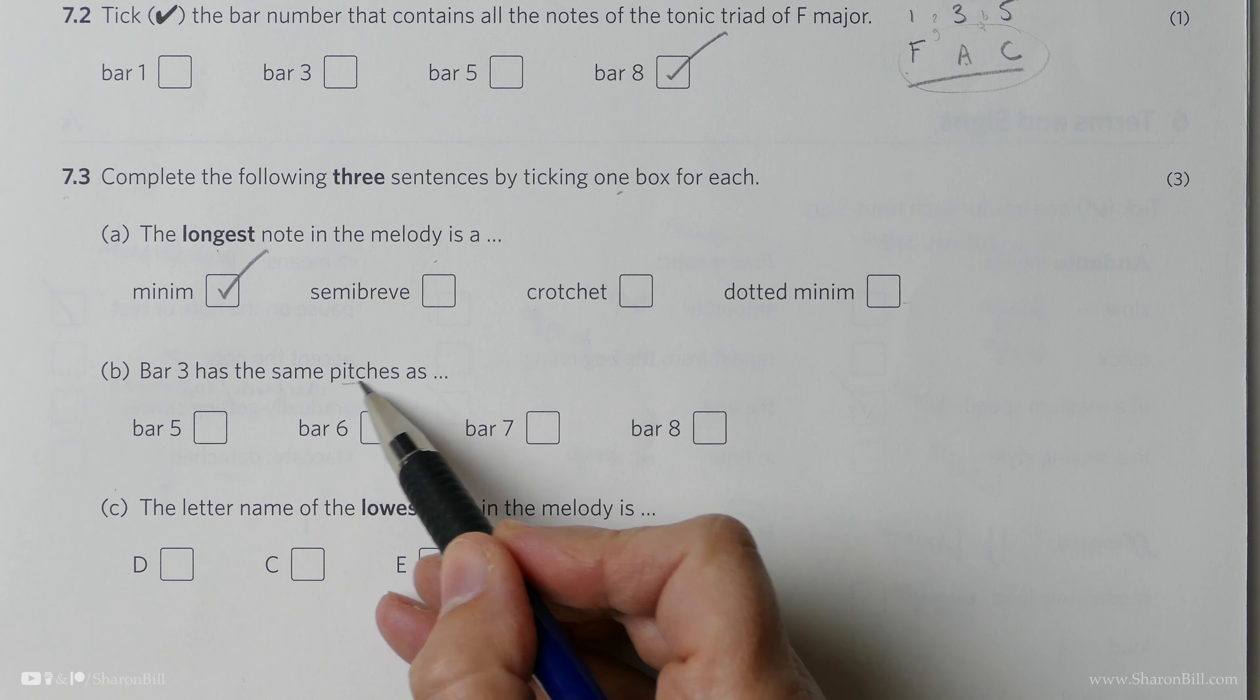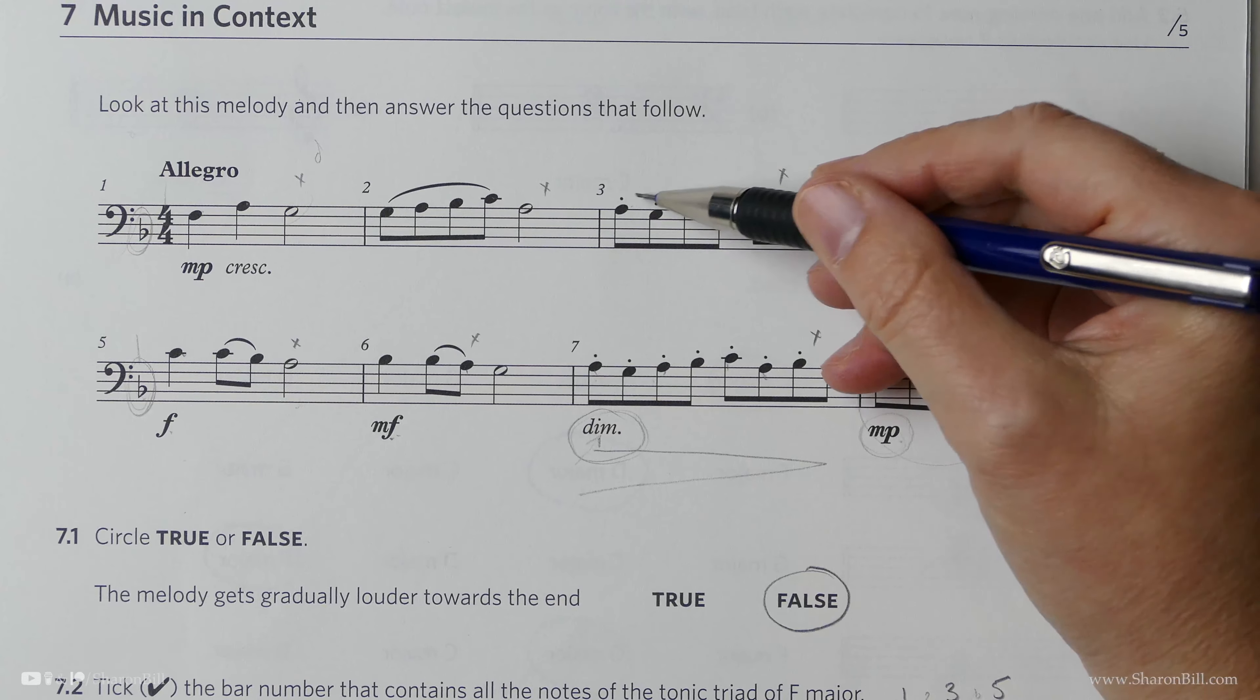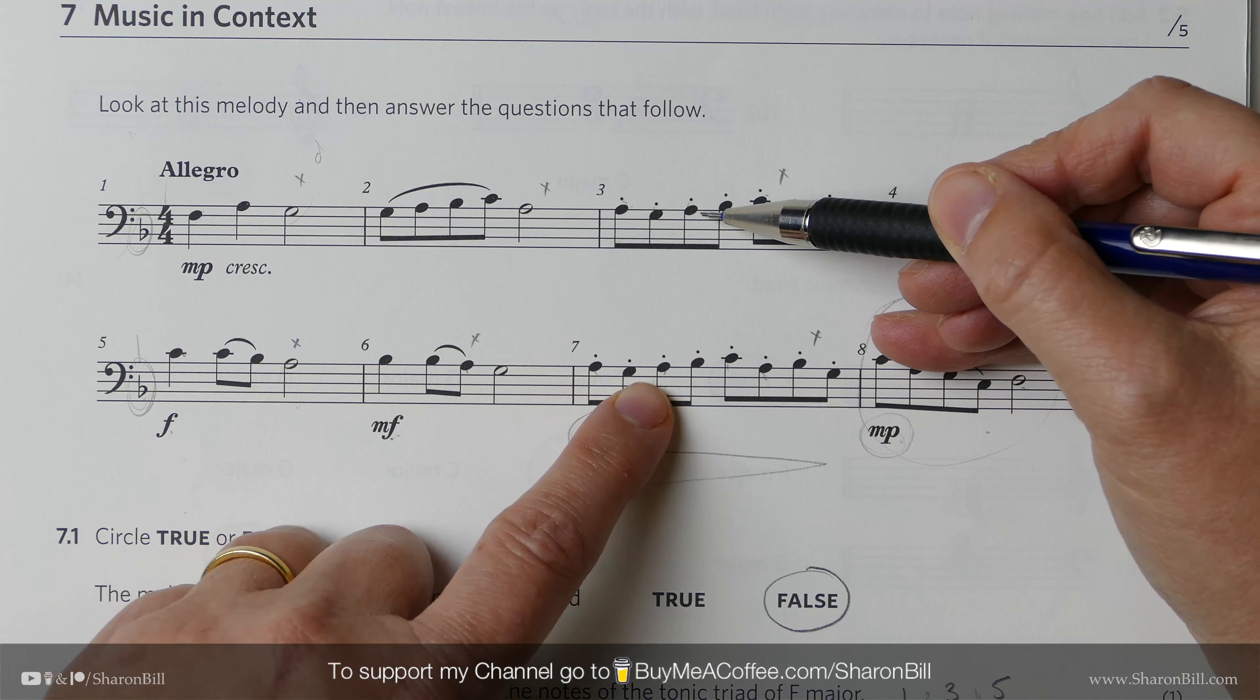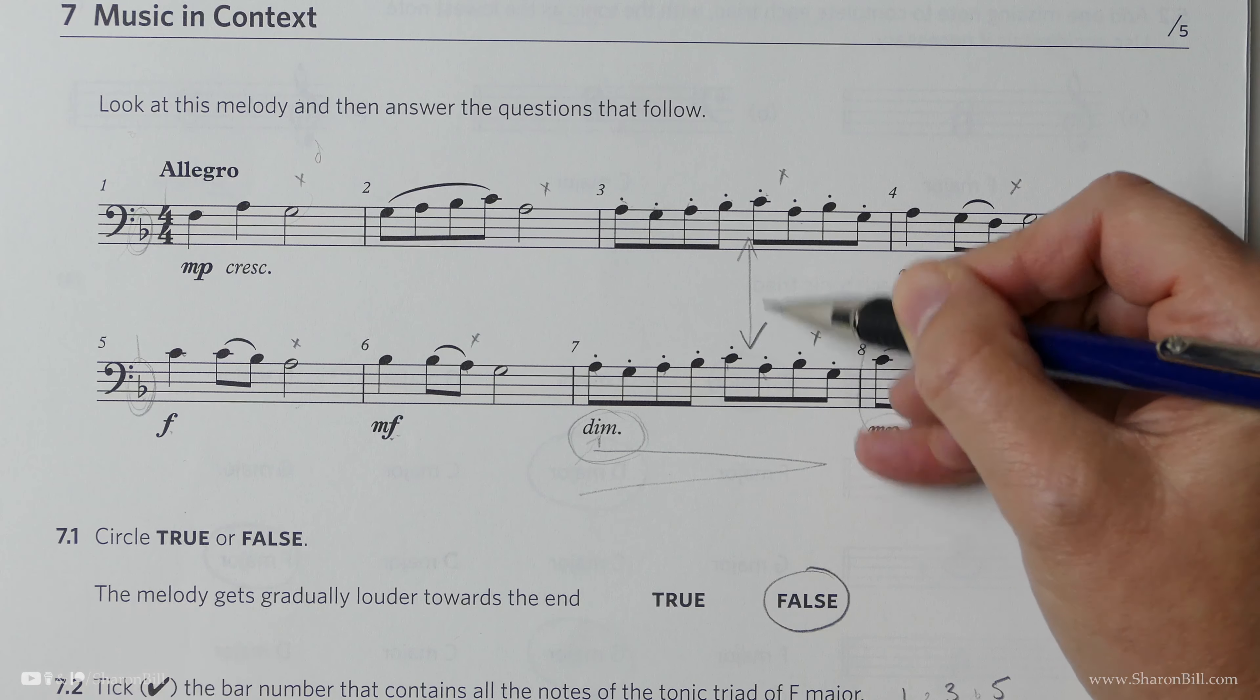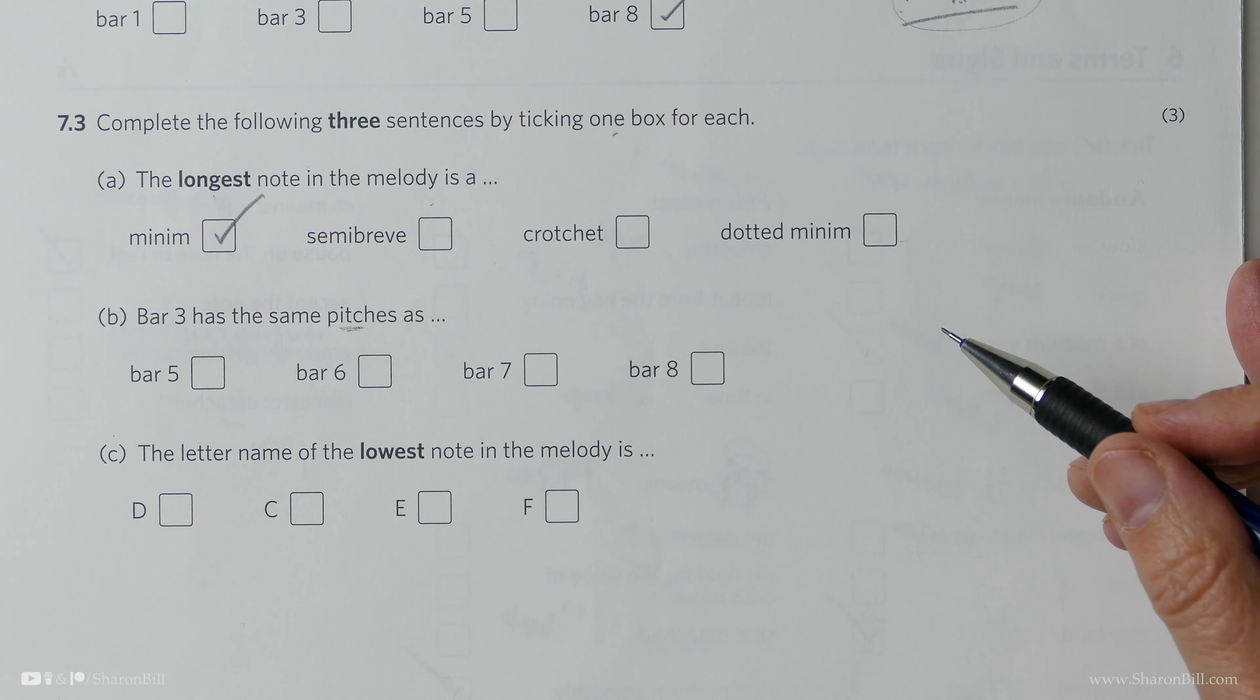Bar three has the same pitch. So, the same note pitches, the same note names. Let's have a look. So, what does bar three have? We have an A, G, A. And, you know, just as a glance, let's look. A, G, A, B flat, C, A, B flat. It actually has the same pitch and the same rhythm. It's exactly the same. However, we're just concerned with pitch. And so, bar three has the same pitch as bar seven.